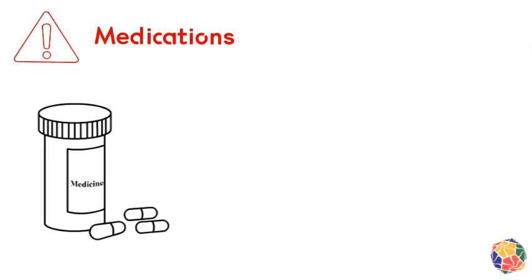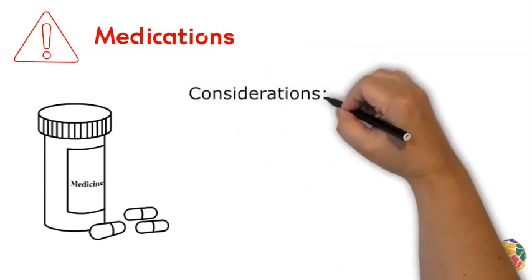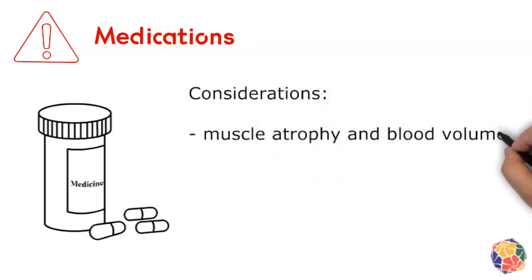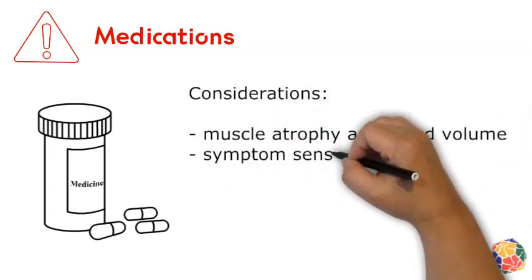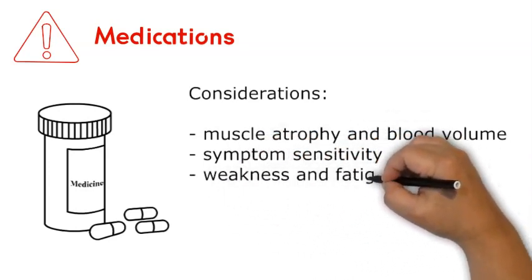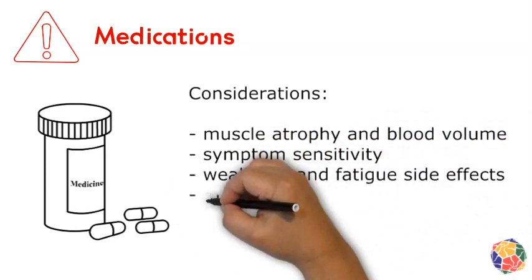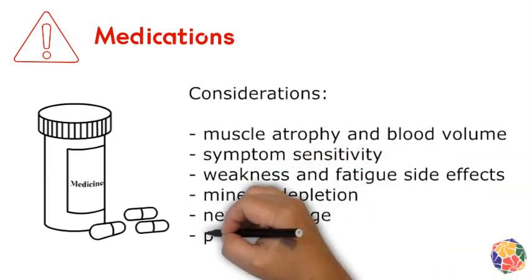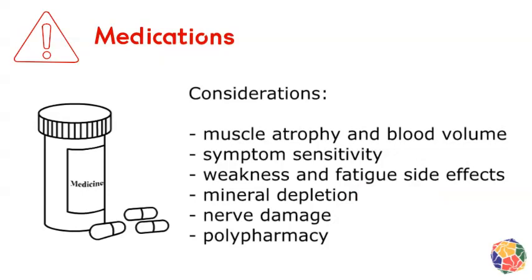Some people who have a lot of muscle atrophy or very sensitive symptoms will need greater scrutiny of their medication use. Some classes of medications are known to increase weakness and fatigue, usually as a side effect. Others can cause mineral depletion, which can affect neuromuscular function, and some medications may contribute to nerve damage.